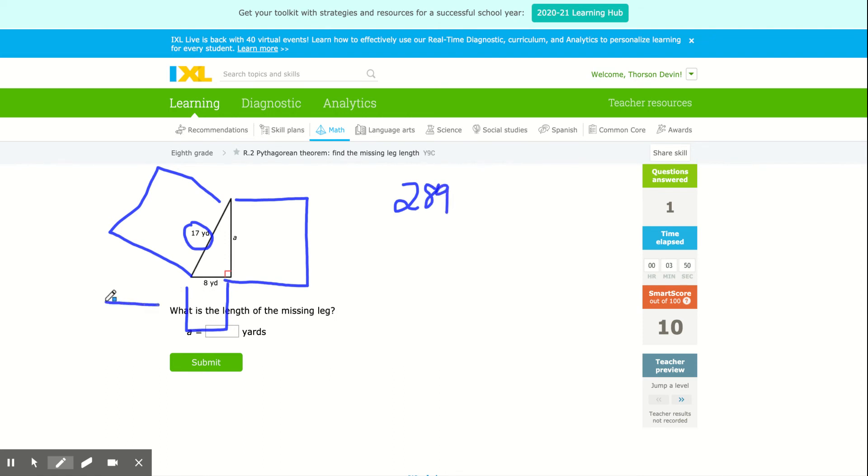The area of this smaller square over here that has a side length of 8, so it's an 8 by 8, well that's going to be 64.